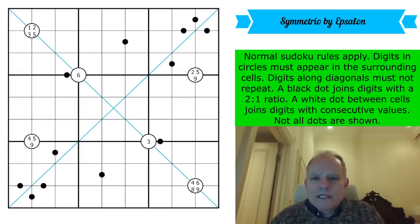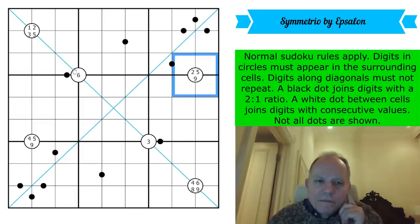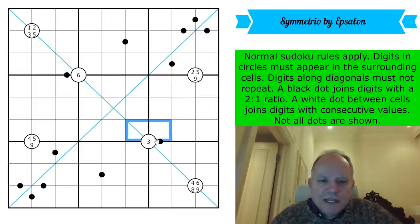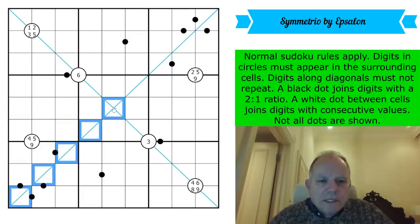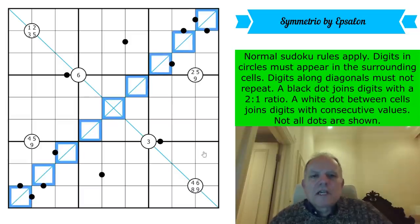Let's have a look at the rules. Normal Sudoku rules apply. Digits in circles must appear in the surrounding cells. So those cells must contain two, five and nine at least once each. There could be two of any of them. There could be two sixes around there, two threes around there. That's fine. Digits along diagonals must not repeat.